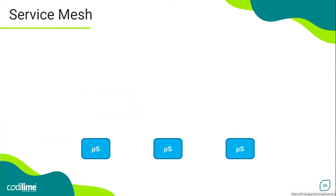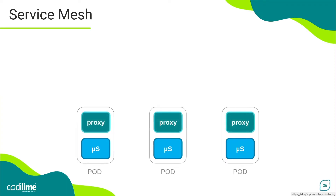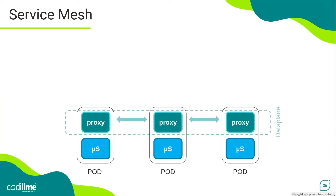And here the service mesh concept comes in handy. A service mesh is extra software that acts as an intermediary layer between services and provides the aforementioned functionality in the form of proxies associated with the service instances. They basically act as layer 7 proxies working in both forward and reverse mode, and they handle calls to and from the services. When a service mesh implementation is deployed in a Kubernetes cluster, the proxies are sidecar containers that run in the same pods as the service containers.